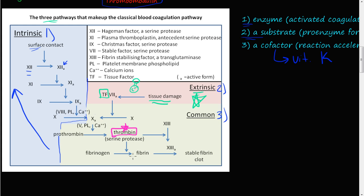Fibrinogen and fibrin form the secondary plug and connect platelets together, attaching to these complexes. In the blood clot, they can entrap white blood cells and other cells that help repair and stabilize the clot, so blood doesn't keep leaking into the tissues. Once fibrin is converted from fibrinogen by thrombin, factor 13 becomes activated and forms crosslinks between fibrin molecules, creating the stable fibrin clot.